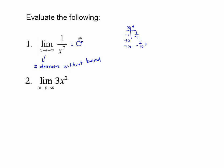With x approaching negative infinity, x is getting smaller and smaller. But when we square those numbers, they become positive and very large. Multiply by 3 and they're even more positive and large. So the limit here is positive infinity, or no limit. The exponent matters quite a bit.